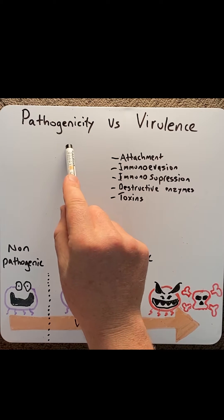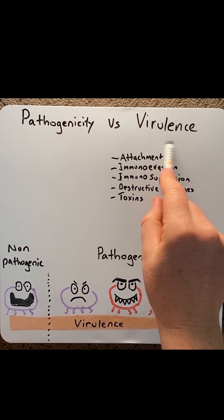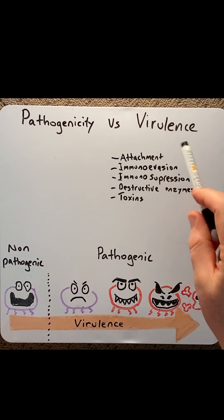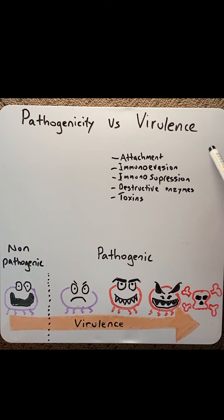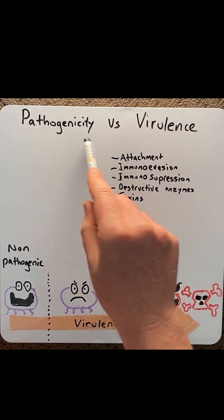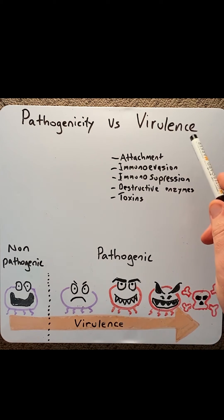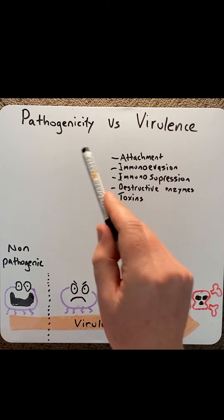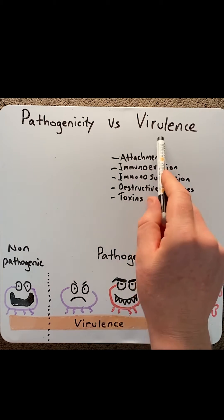In medical and health sciences, the terms pathogenicity and virulence are used to describe the disease-causing potential of microorganisms, such as viruses, bacteria, fungi, etc. Sometimes these terms are used interchangeably and confused, so the purpose of this video is to clarify these two terms.